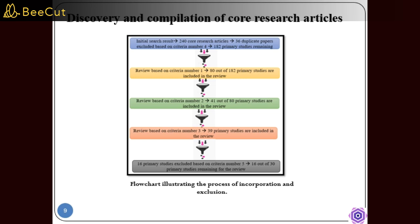Subsequently, 41 articles meeting criteria number 2 offered detailed approach information. Among these, 30 satisfied criteria number 5 by presenting practical approaches for real-world application. To prevent redundancy, 14 papers were excluded if an author had multiple similar works, leaving a final selection of 16 core research articles for the literature review.